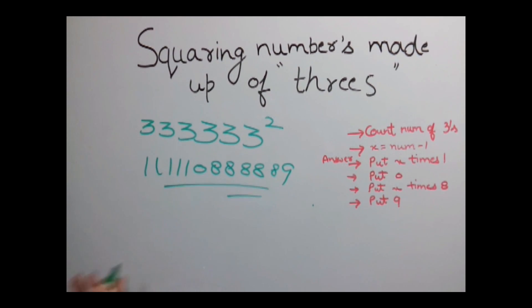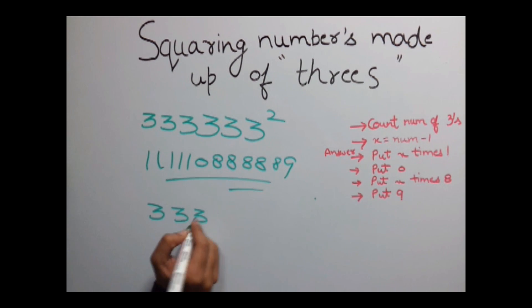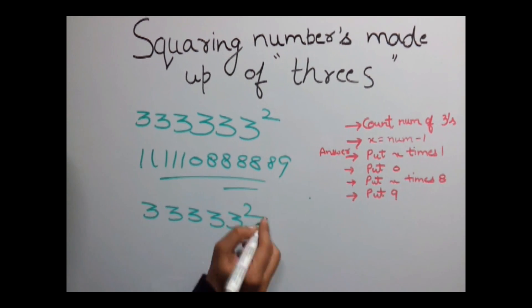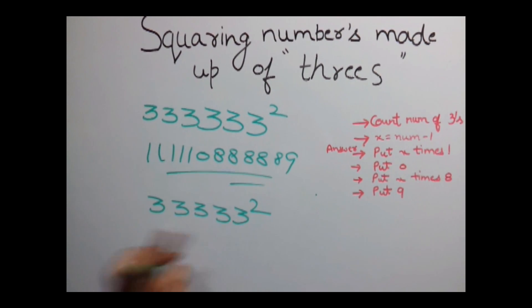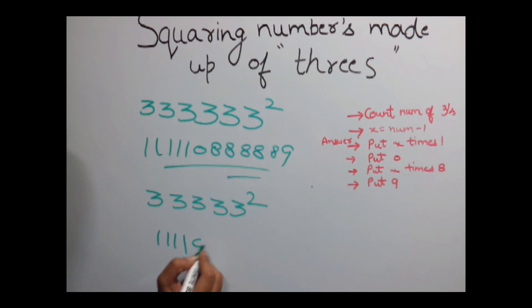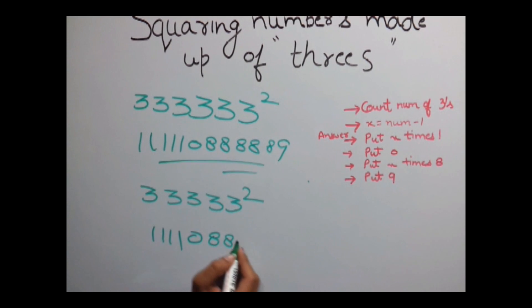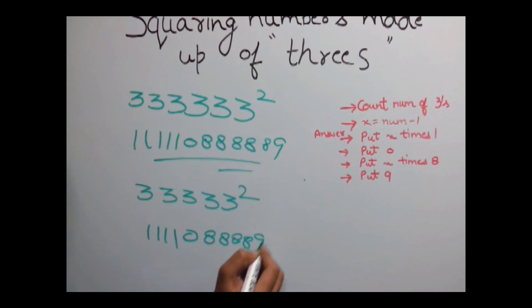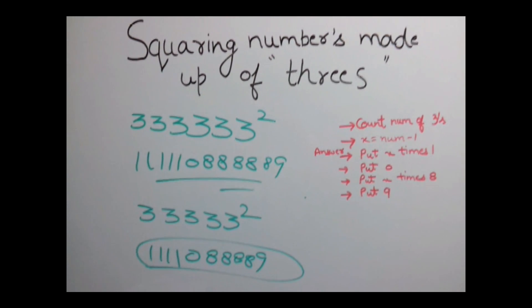Let's have another example. Let's find out square of this number. So here number of 3's are 5. So our answer would be 4 times 1. Single 0. 4 times 8 and single 9. Easy.